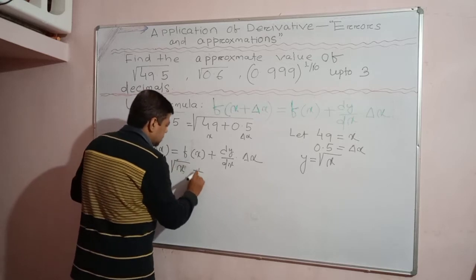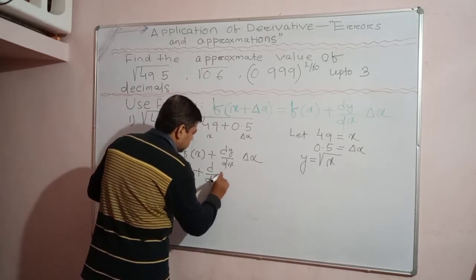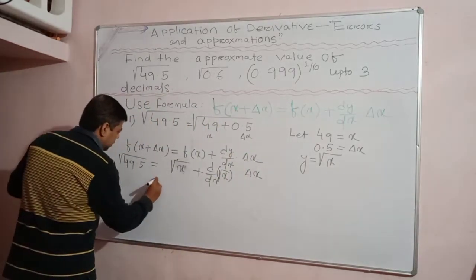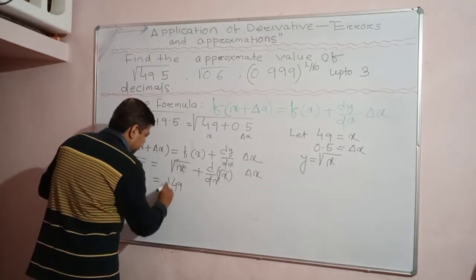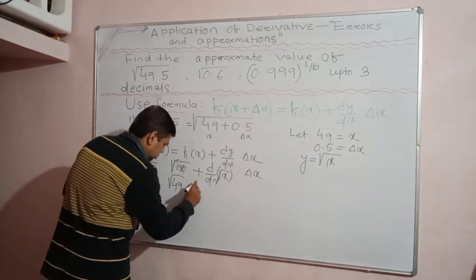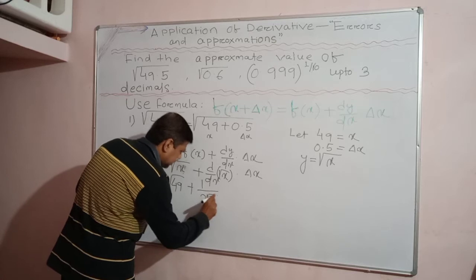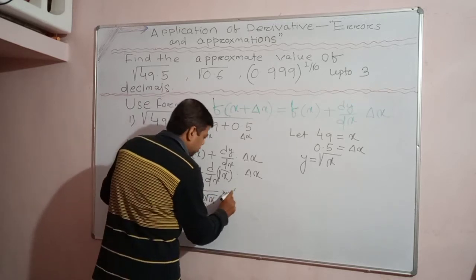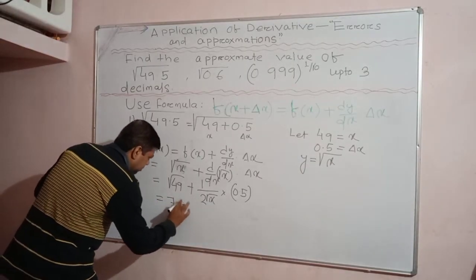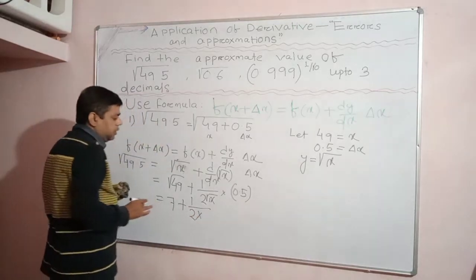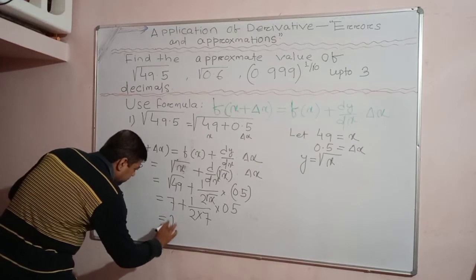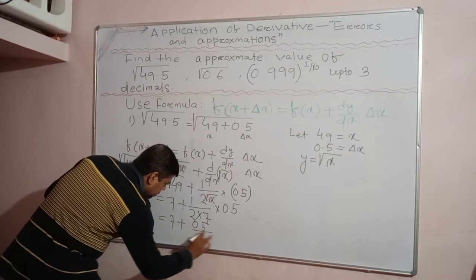We have √49 plus the derivative of √x, which is 1/(2√x), multiplied by Δx = 0.5. Substituting x = 49: √49 = 7, so this becomes 7 + 1/(2·√49)·0.5 = 7 + 1/(2·7)·0.5 = 7 + 0.5/14.